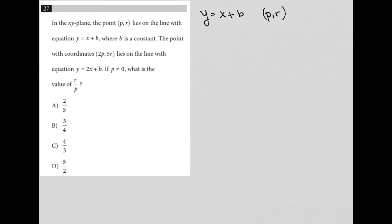The question goes on to say, the point with coordinates 2p, 5r lies on the line with equation y equals 2x plus b. Okay, so we have another equation that is y equals 2x plus b. And we're told that there's a point on that line that is 2p comma 5r.